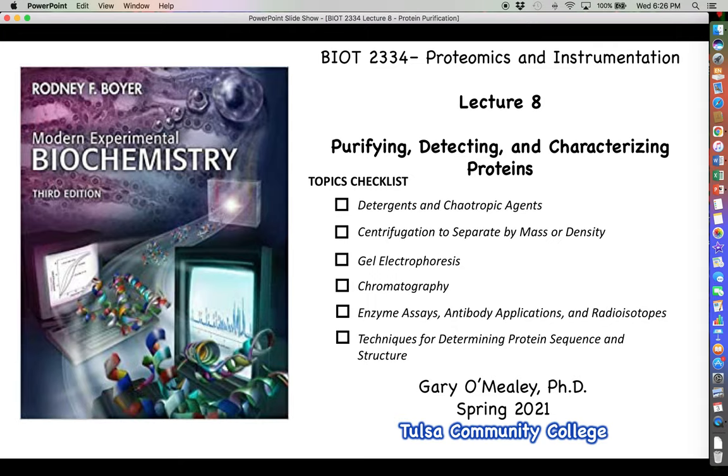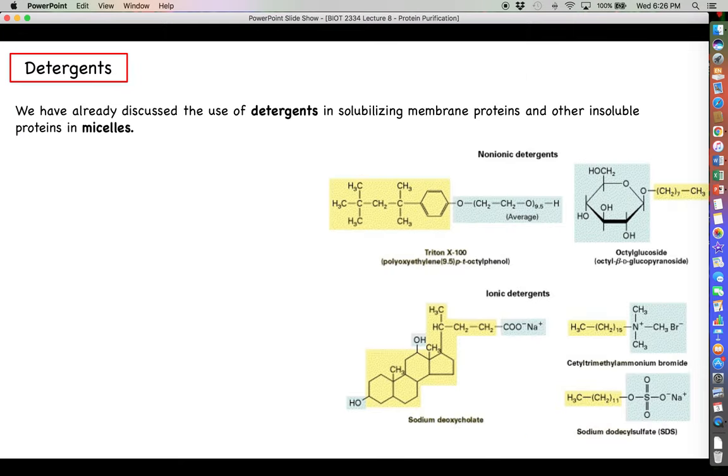The first two topics on this checklist are mostly going to be review for us, but along the way throughout this entire lecture we're going to learn about all the different ways we can go about purifying not only tyrosinase but other enzymes or other proteins based upon the sorts of physical and chemical characteristics that we have the means to find out about. So let's go ahead and start with a little bit of a review on the use of detergents.